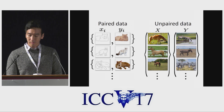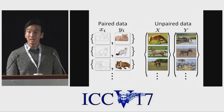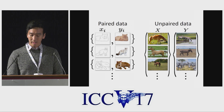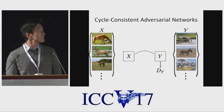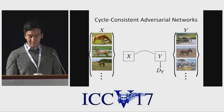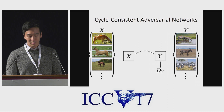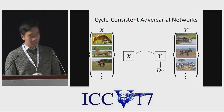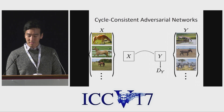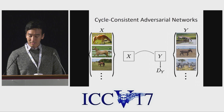But what if you don't have access to the corresponding pairs? For example, you want to translate horses to zebras. In this paper, we learn an image translation even when we don't have correspondences. In such cases, given an input horse, all we know is that the output should look like a zebra. We can do this using an adversarial loss on the output. But is this enough?